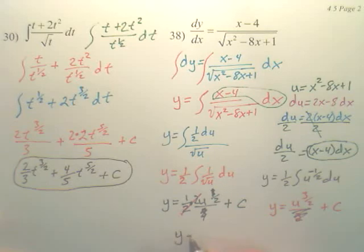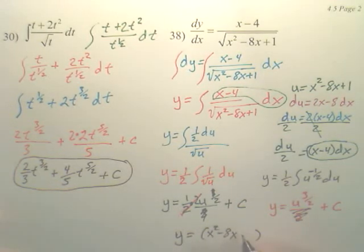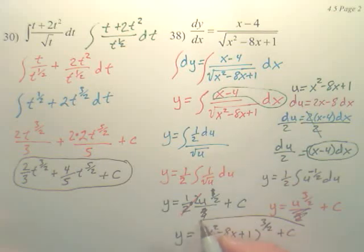So, my answer is simply, what's u again? u is x squared minus 8x plus 1 to the 3 over 2 plus c.